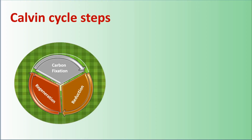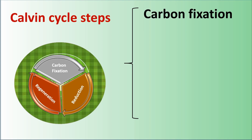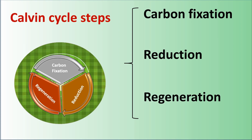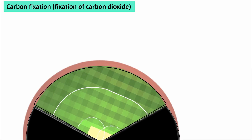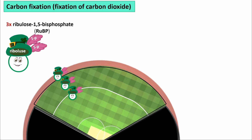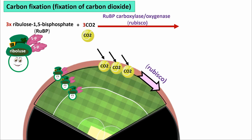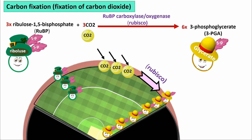The Calvin Cycle has three steps: carbon fixation, reduction, and regeneration. The first step of the Calvin Cycle is carbon fixation, or fixation of carbon dioxide. Three ribulose 1,5-bisphosphate, or RuBP, combine with three CO₂, catalyzed by RuBP carboxylase oxygenase, or RuBisCO, making six 3-phosphoglycerate, or 3-PG.